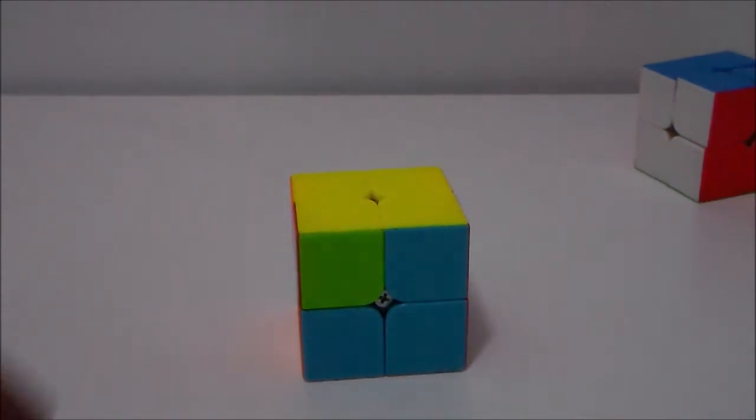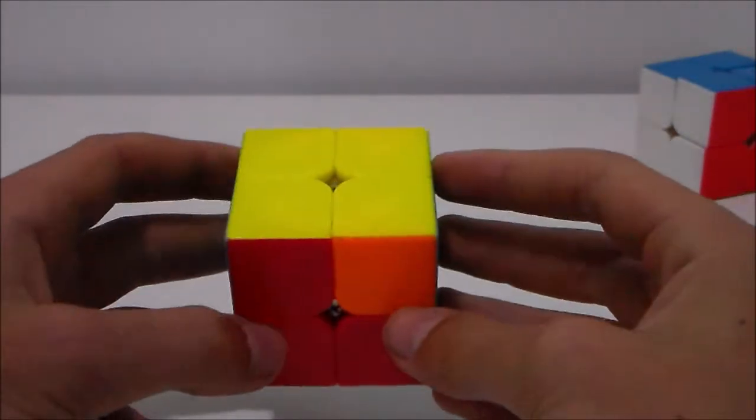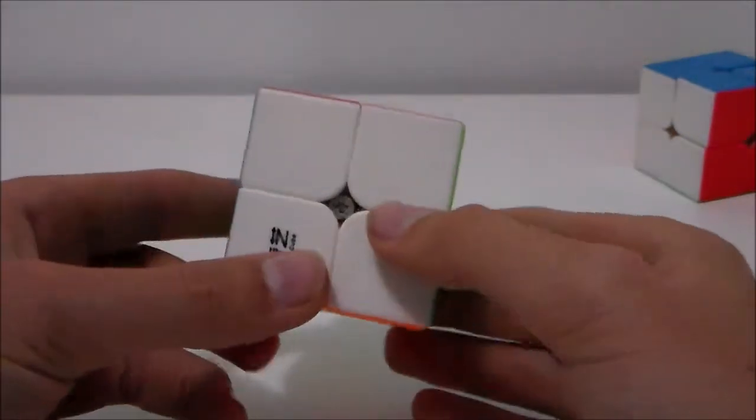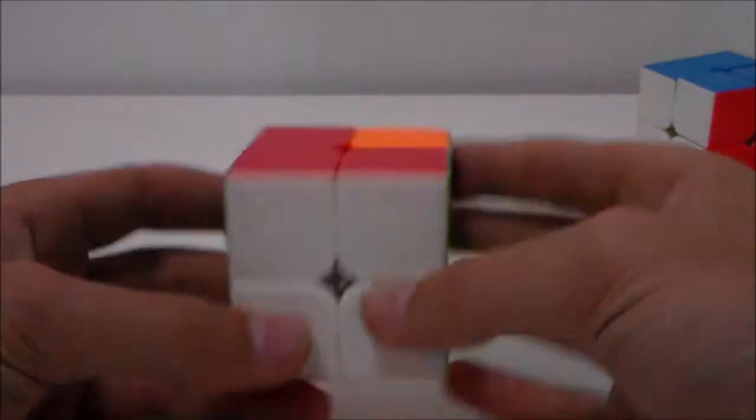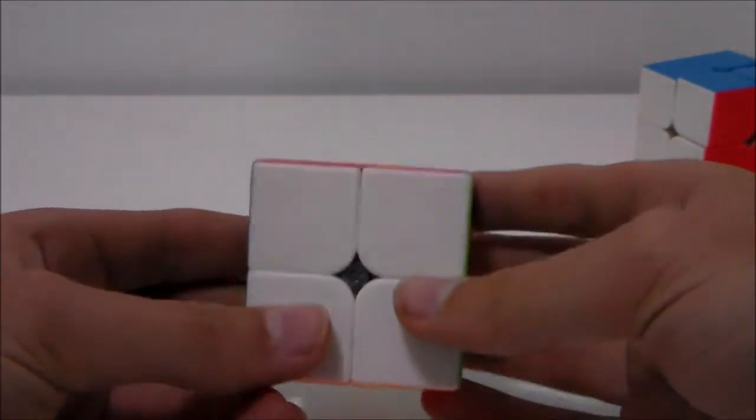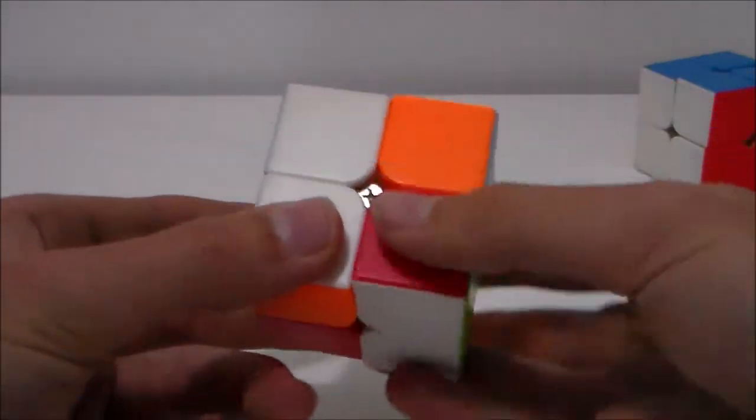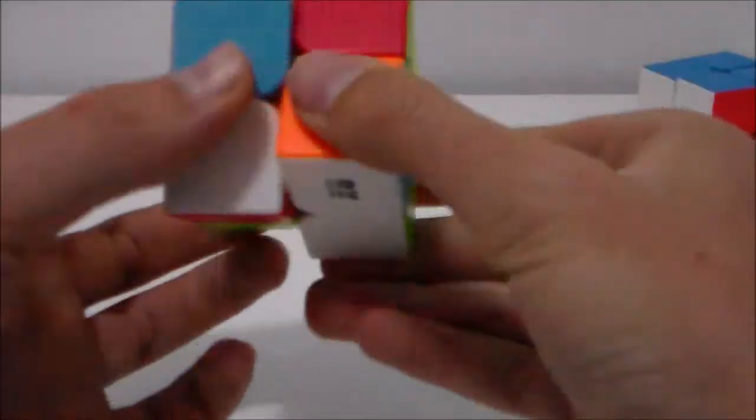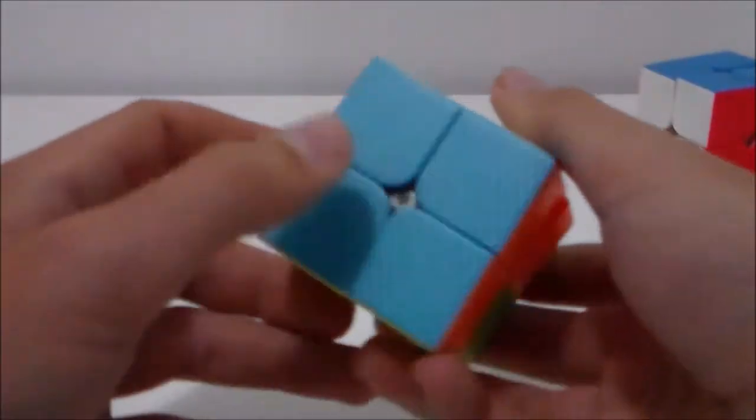The second and final case is when there are no pieces that are aligned together. So what you will want to do to solve this is get the white on the front and yellow on the back, similarly to the first case. So then you will want to perform the same algorithm. And then there should be a piece that is aligned together.